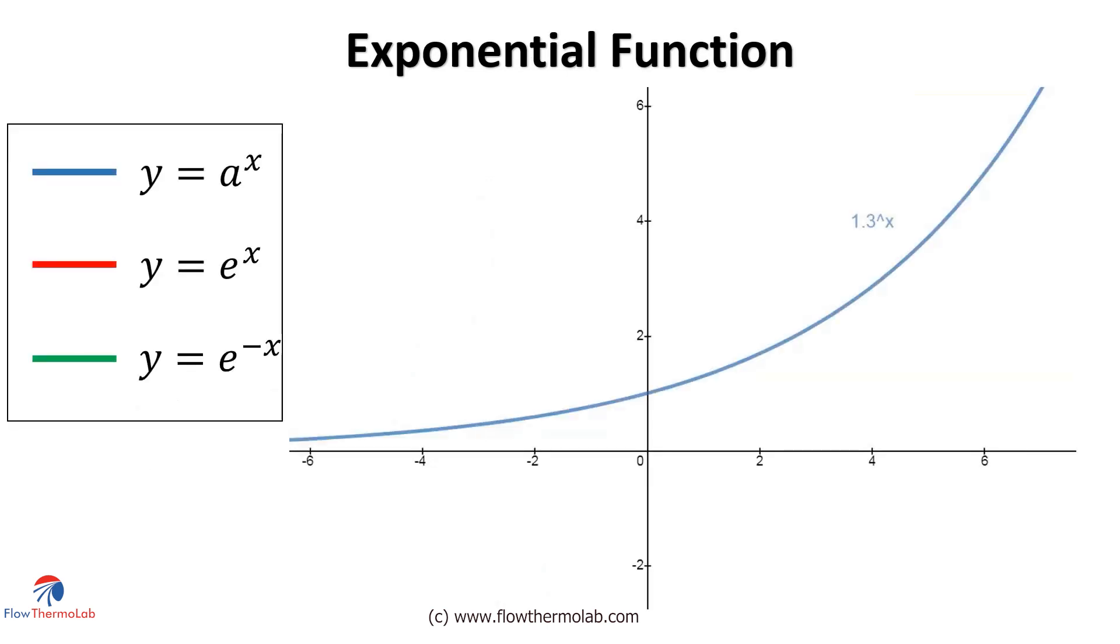Now let's plot exponential functions. In general, y equal to a power x will look like this. The initial growth will be minimal, but then it exponentially grows. If the value of a becomes equal to 2.7182 etc, that is the value of e, both the curves e power x and a power x will merge together. Similar to the exponential growth, there will be exponential decay also, like the variation of temperature in a cooling process. That is represented by e power minus x.